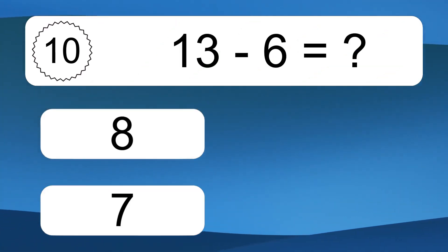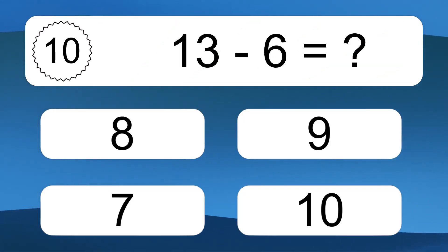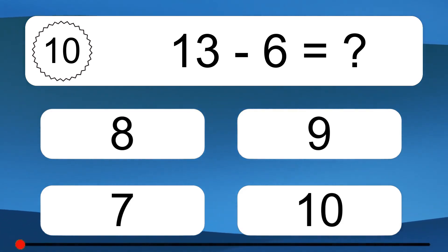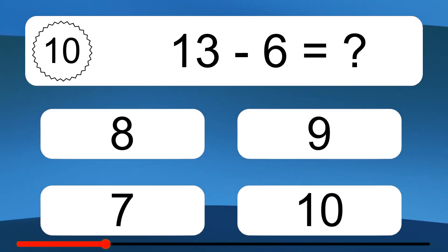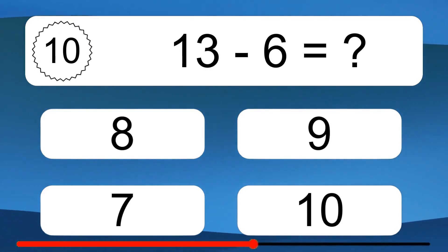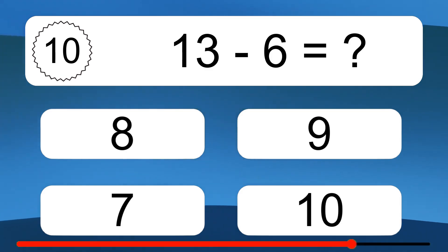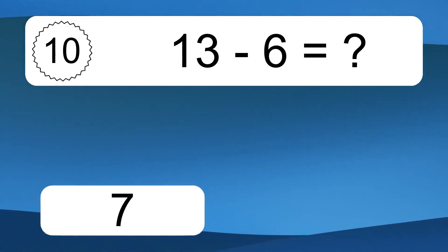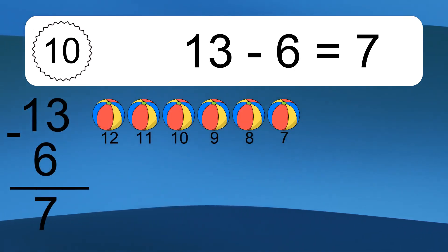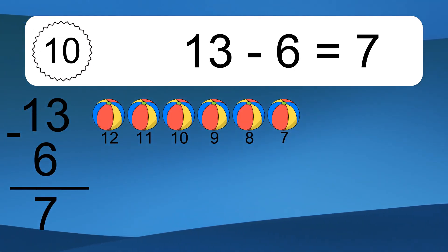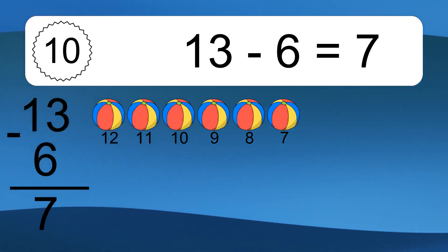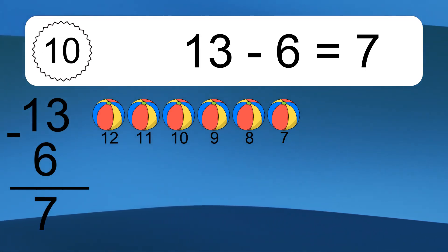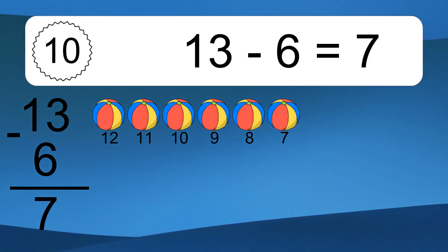13 minus 6 equals what? 13 minus 6 equals 7. Let's count it: 12, 11, 10, 9, 8, 7.